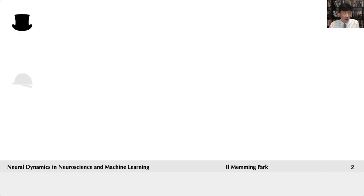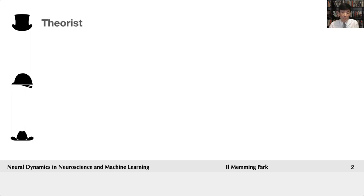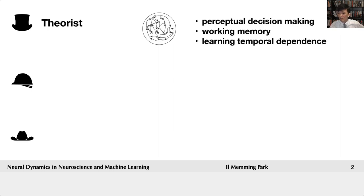So today I'm going to tell you a little bit about myself first. To understand neural computation, I wear a few different hats. As a theorist, my goal is to build relatively simple mathematical models and frameworks that allow us to reason about the behavior of neural networks. I'm interested in how perceptual decision-making and working memory are implemented, and how ongoing dynamics can support learning of temporal dependencies.